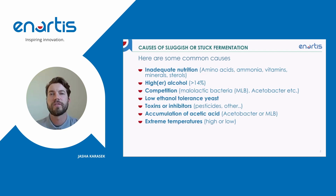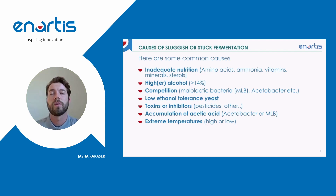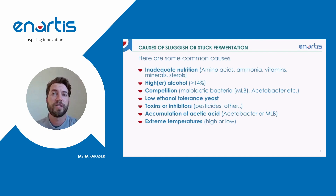Accumulation of acetic acid — either from acetobacter, malolactic bacteria, or from Saccharomyces itself — can be an inhibitor of Saccharomyces cerevisiae. The higher the acetic acid levels, the more difficult it is for yeast to ferment. Extreme temperatures, either high or low, or big temperature changes can also shock the yeast and inhibit a fermentation.